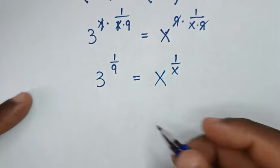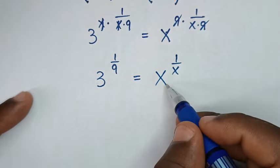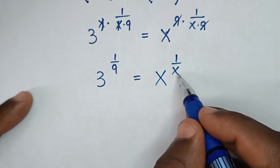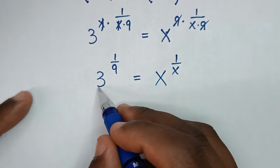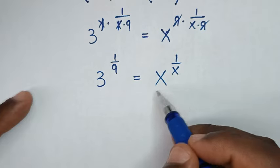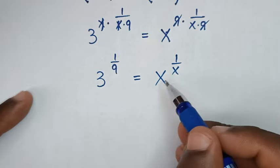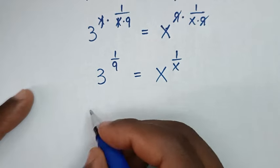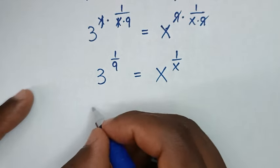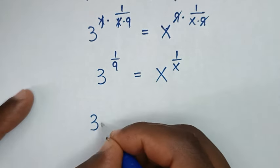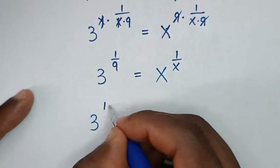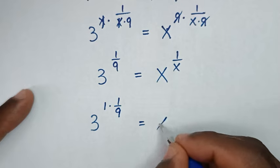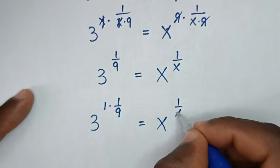Then in the next step, from here, we have base of x power of 1 over x. So we make same base with same power. Same base of x which we don't know, and same power of 1 over x from this side. So it will be 3 power of 1 over 9, which is the same as 1 times 1 over 9, is equal to x power of 1 over x.